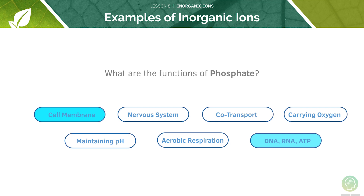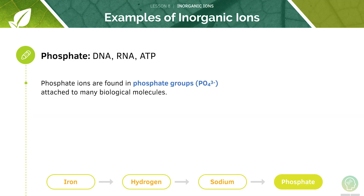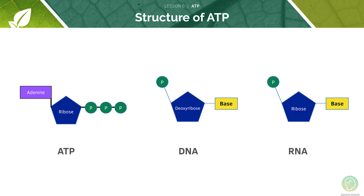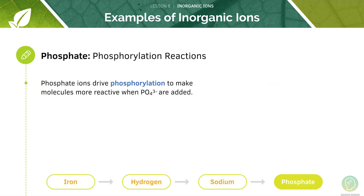Phosphate is used in the cell membrane and also in DNA, RNA and ATP. Phosphate ions are often found attached to many biological molecules as phosphate groups. In ATP, the energy is stored in the phosphoanhydride bonds between the three phosphate groups. During respiration, the chemical energy stored in foods is converted into ATP, storing the energy in a readily available form. Phosphate groups can also be added to molecules to make them more reactive through phosphorylation.